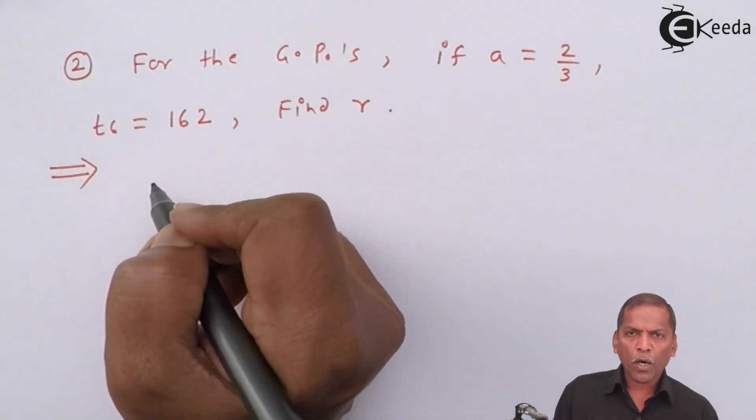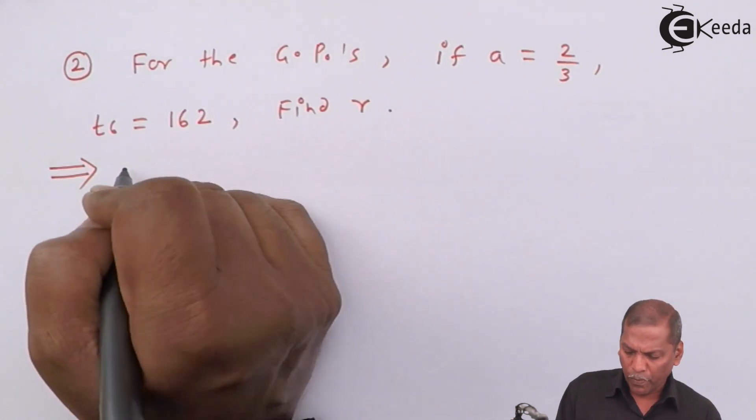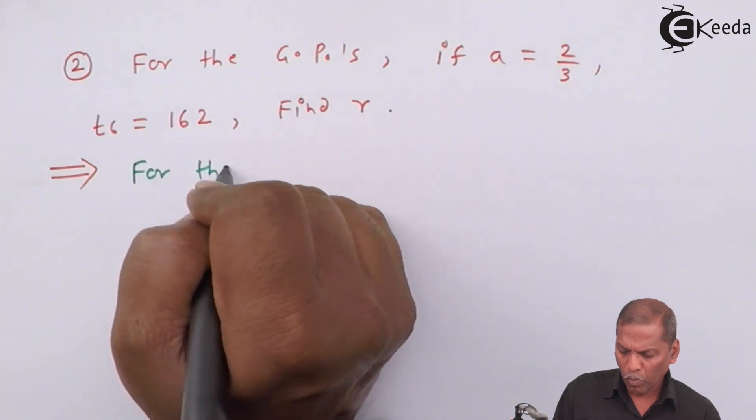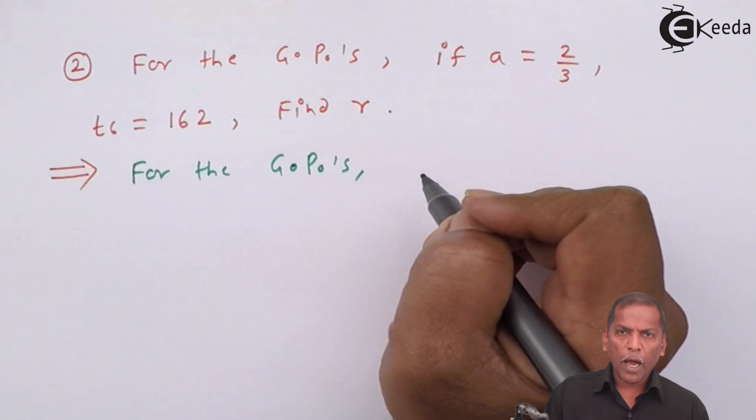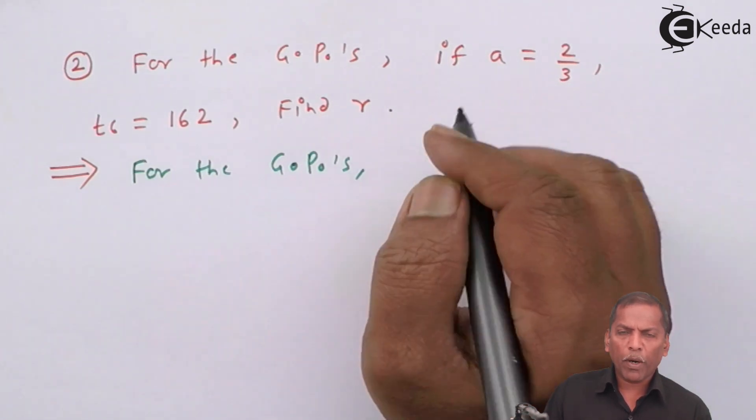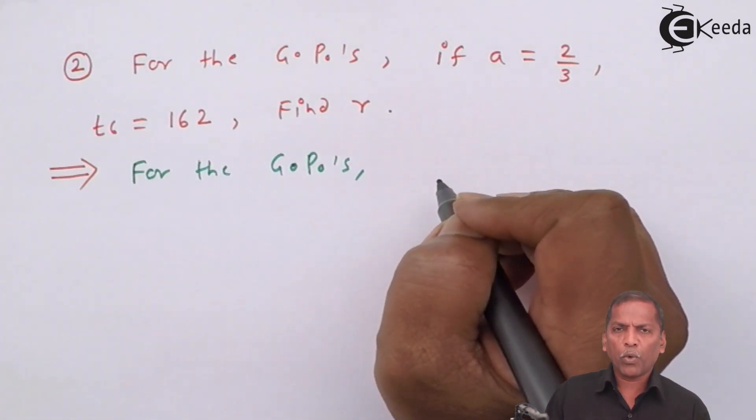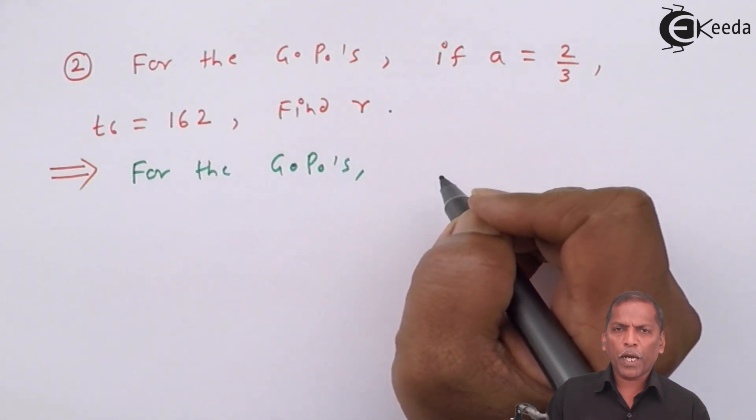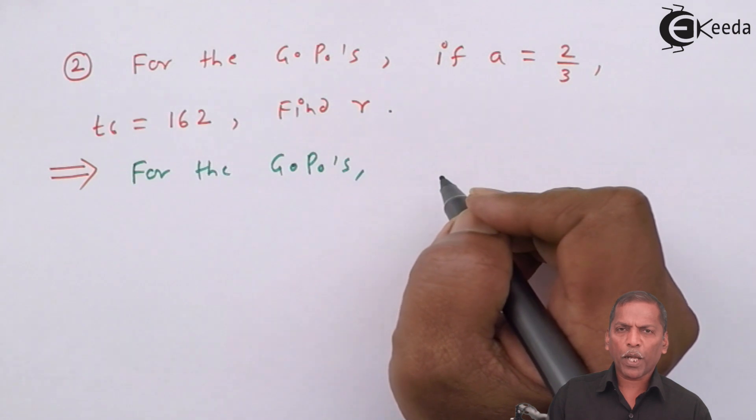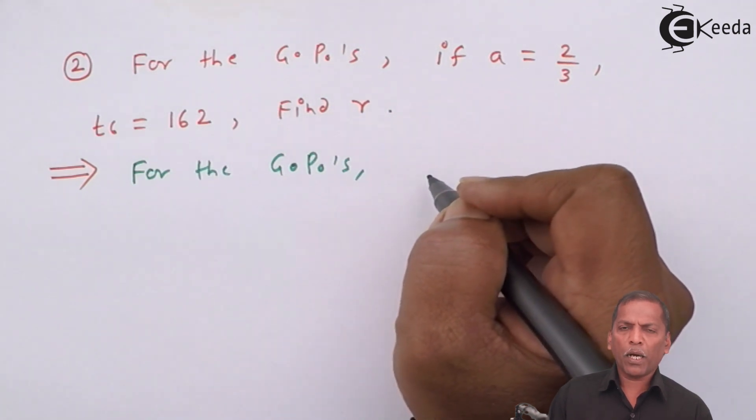For a GP, the nth term Tn is given by A times R raised to n minus 1, where A represents the first term, R represents the common ratio, and n represents the term number.